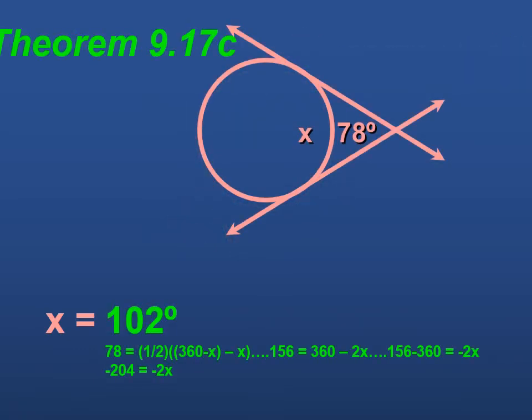We're going to do 360 minus X minus X, which gives us 2X. So now we have 156 equals 360 minus 2X. We're going to solve for X, so we're going to subtract 360 from both sides, giving us negative 204 equals negative 2X. We're going to divide both sides by negative 2, which gives us X equals 102.